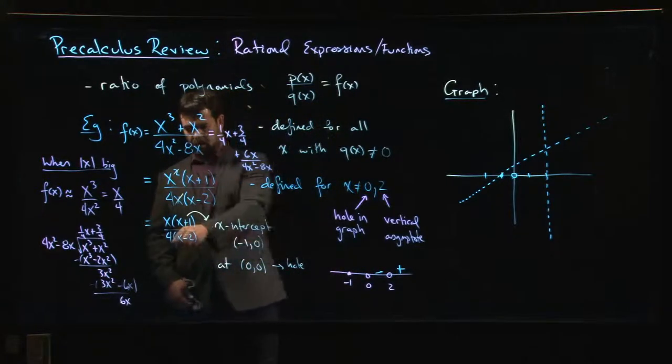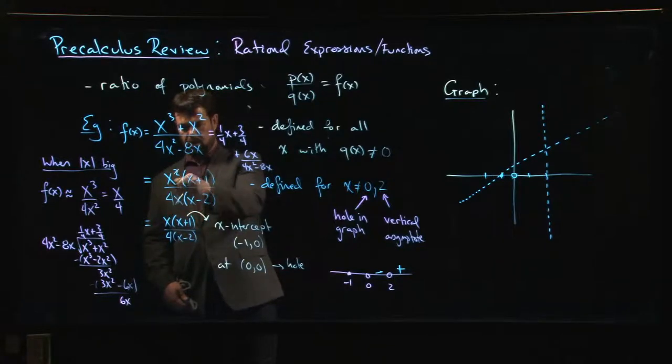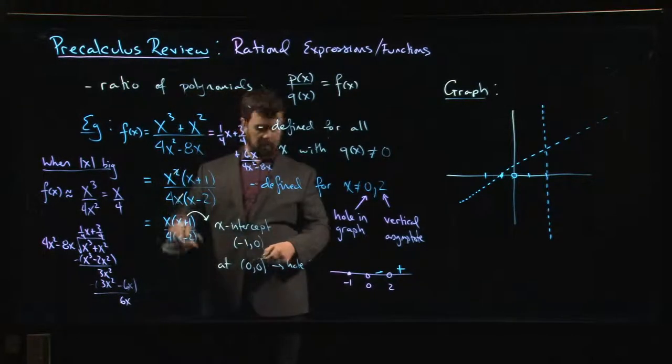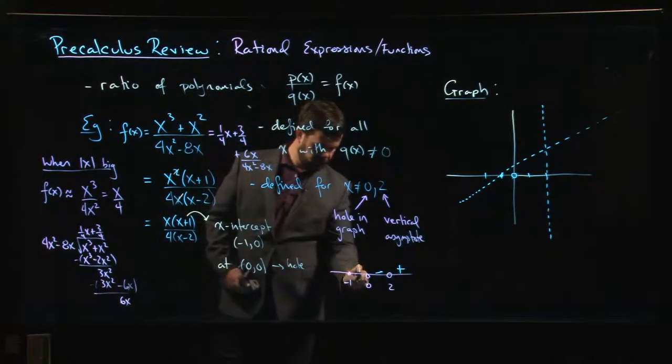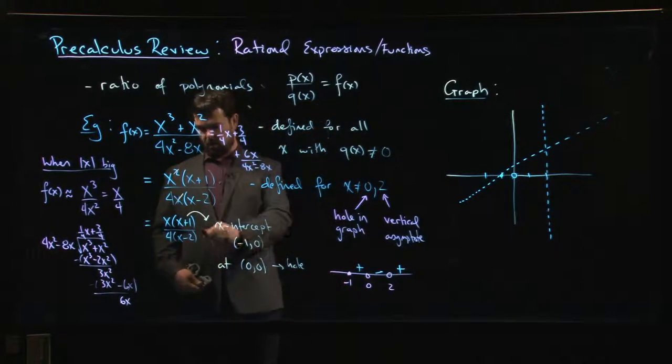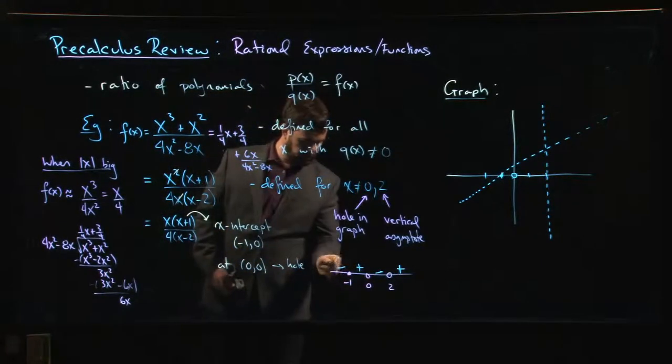What about when I cross zero? Well that's going to become negative right, I had x squared originally but there was that x on the bottom that canceled it so that's going to become negative. Two negatives, negative over negative gives me positive. And then I get one more sign change at minus one.